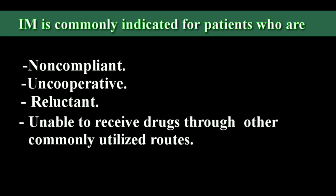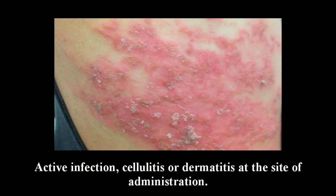In IM injection, we will talk about non-compliant patients, uncooperative patients, and reluctant patients — those unable to receive the drug through other commonly utilized routes. The drug can also be used when oral routes are not suitable, or in the presence of active infections such as cellulitis or dermatitis.